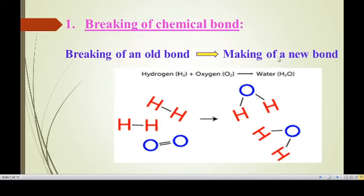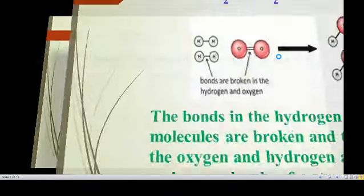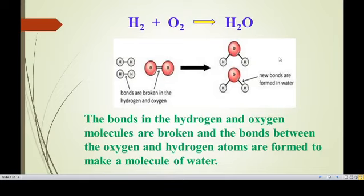Breaking of a chemical bond is one of the characteristics of a chemical reaction. The bonds in the hydrogen and oxygen molecules are broken, and bonds between oxygen and hydrogen atoms are newly formed to make a molecule of water.